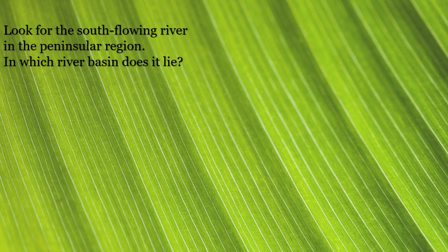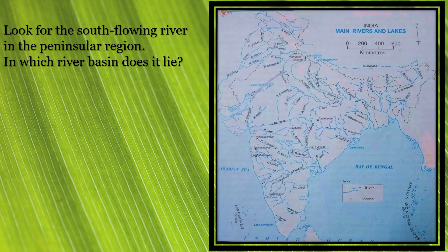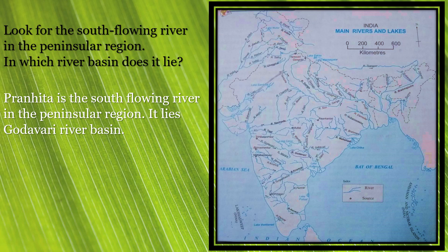Next question: look for the south-flowing river in the peninsular region — in which river basin does it lie? On page 21 of our textbook, figure 3.5, we have the drainage system of India. River Pranahita flows in the south direction, and it lies in the Godavari basin. So Pranahita is the south-flowing river in the peninsular region and it lies in the Godavari river basin.